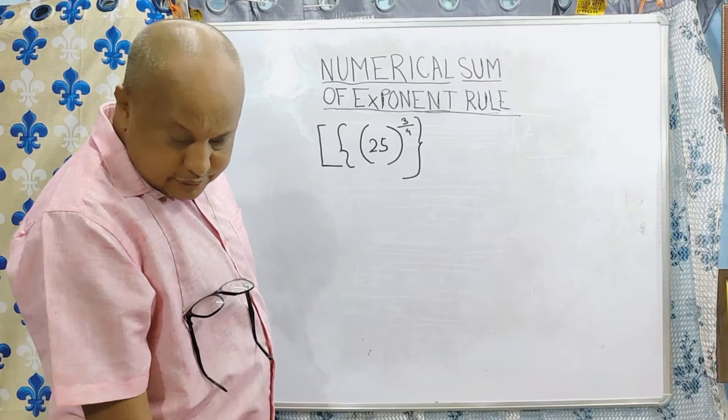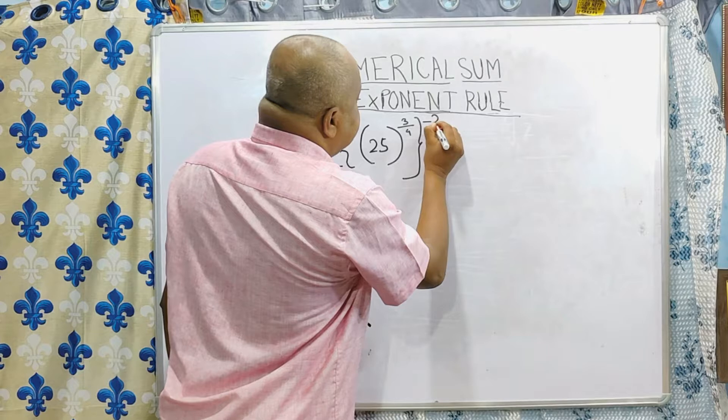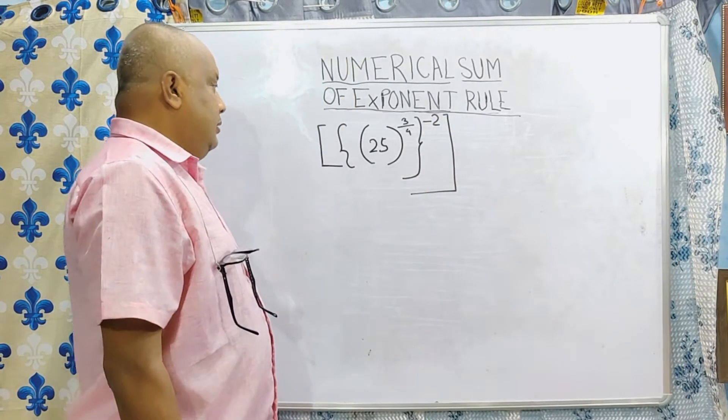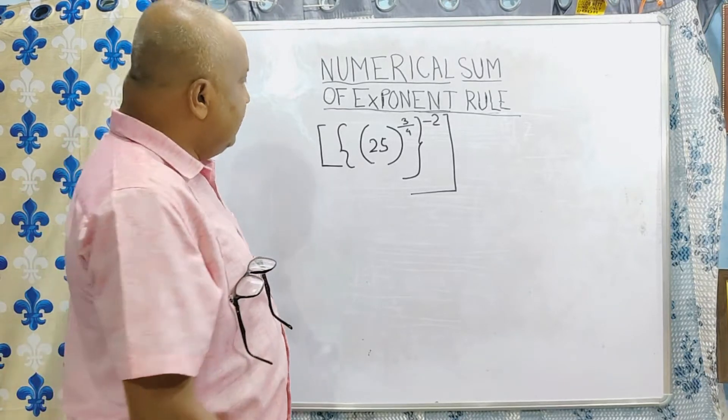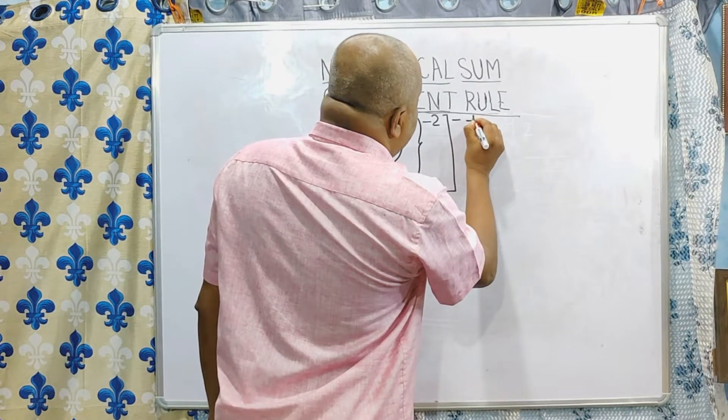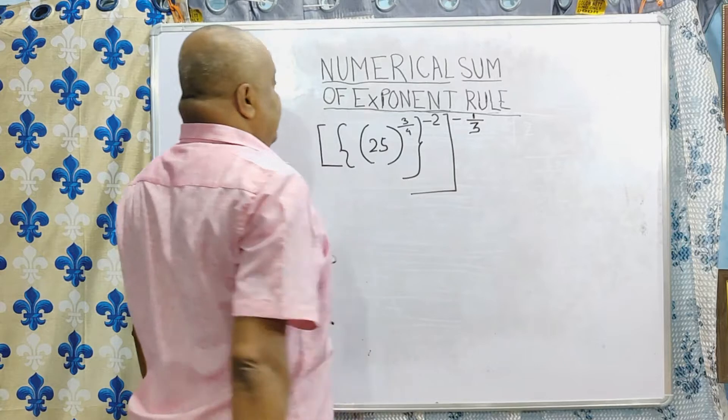Above the second bracket, to the power minus 2. And after completion of third bracket, this is to the power minus 1 by 3. This is the problem.